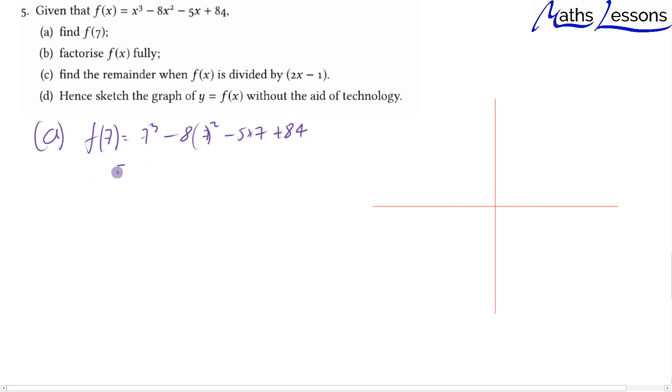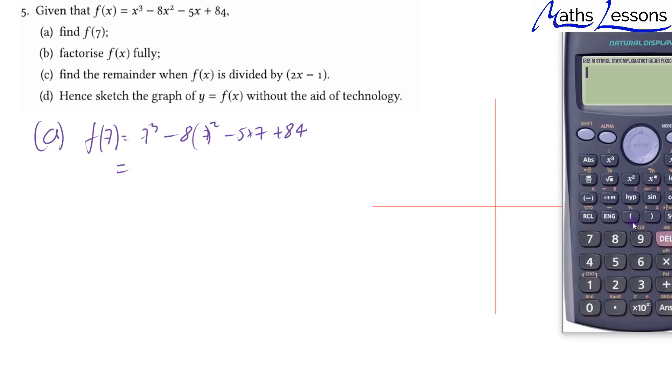We can do that on our calculator. We do 7 to the power of 3, minus 8 times 7 squared (not square rooted), minus 5 times 7 plus 84, and it gives us 0.